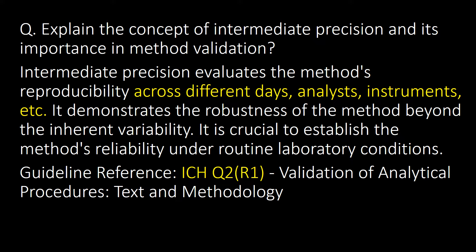Explain the concept of intermediate precision and its importance in method validation. Intermediate precision evaluates the method's reproducibility across different days, analysts, instruments, etc. It demonstrates the robustness of the method beyond inherent variability and is crucial to establishing the method's reliability under routine laboratory conditions. Guideline reference: ICH Q2.